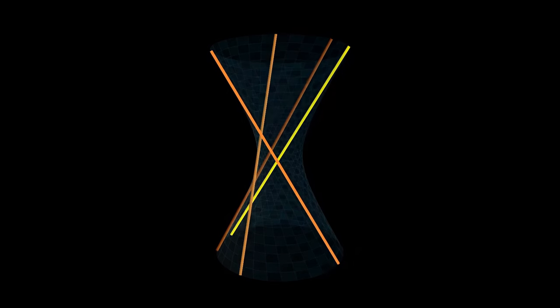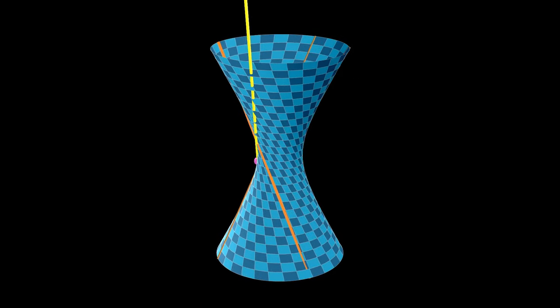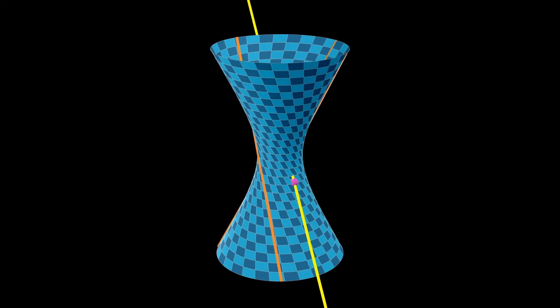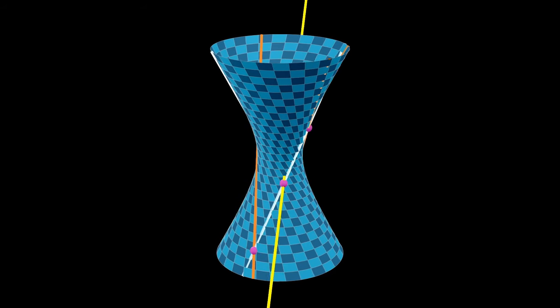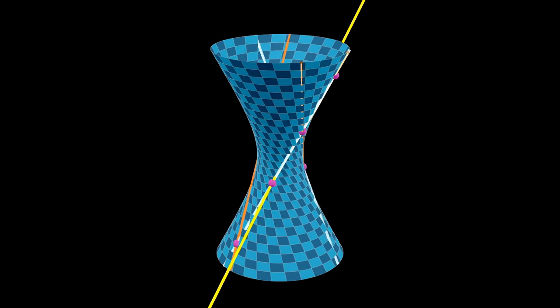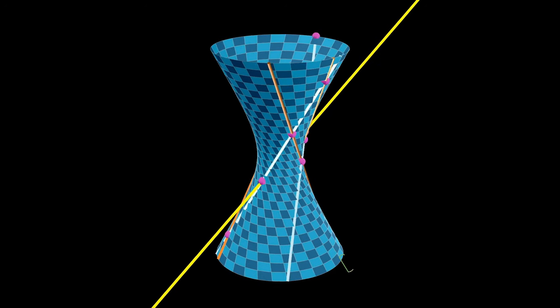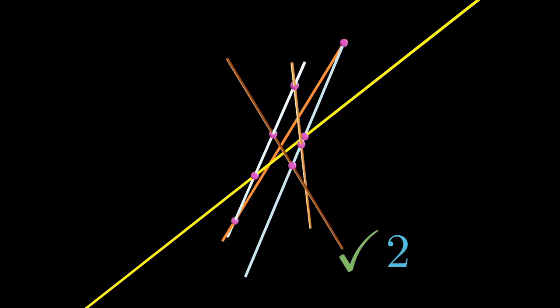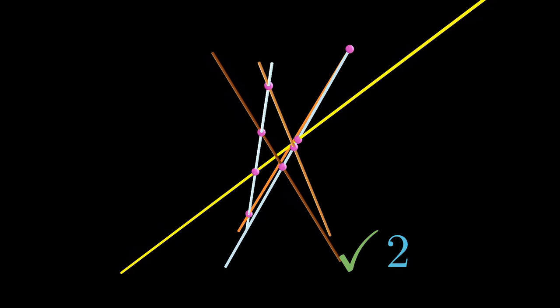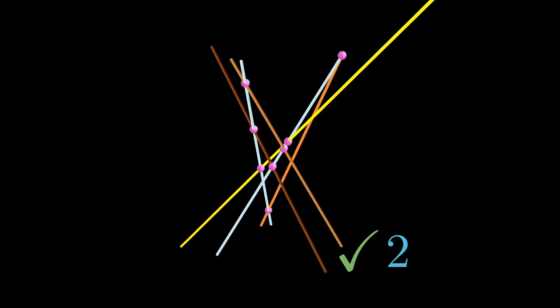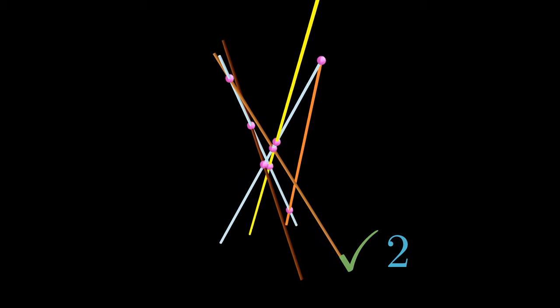The case that really matters, and happens most of the time, is that we pick a line that goes through the hyperboloid at two points. When this happens, there are exactly two lines that intersect all four given lines. And they're given by the lines on the opposite ruling of the hyperboloid that go through the two points given.